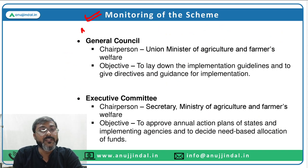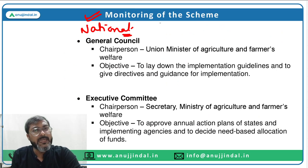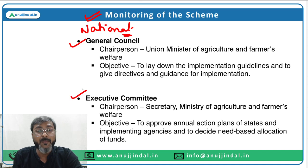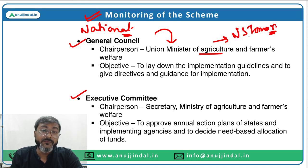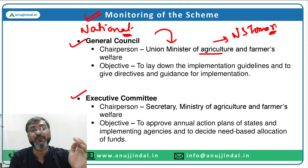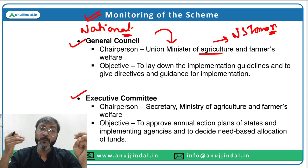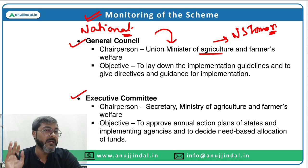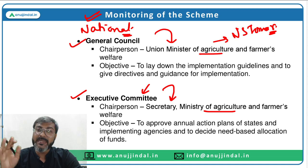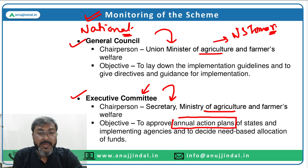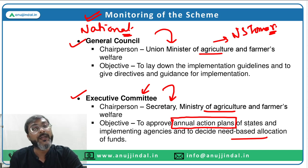Monitoring of the scheme is done at the national level and state level. At the national level there are two organizations. Number one is the General Council, headed by the Union Minister of Agriculture and Farmers Welfare (currently Mr. Narendra Singh Tomar), with the objective of laying down basic guidelines for effective implementation of the scheme. Number two is the Executive Committee, chaired by the Secretary in the Ministry of Agriculture and Farmers Welfare, with the objective of approving annual action plans of state governments and deciding need-based allocation of funds.